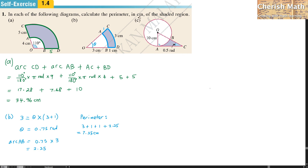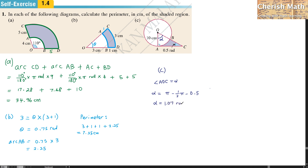For part C, I first need to find the angle alpha. Using supplementary angles in triangle OAC, the angle AOC (alpha) equals pi radians minus the right angle (half pi radians) minus 0.5 radians given. The answer for alpha is 1.07 radians.